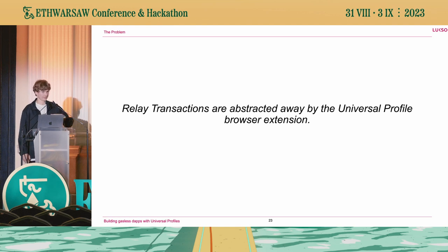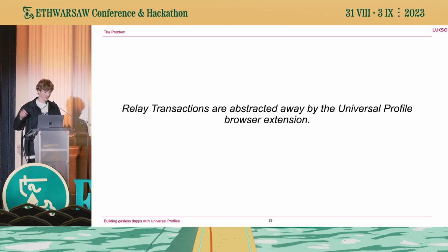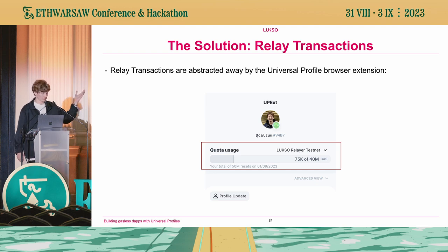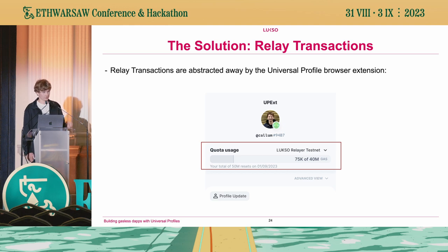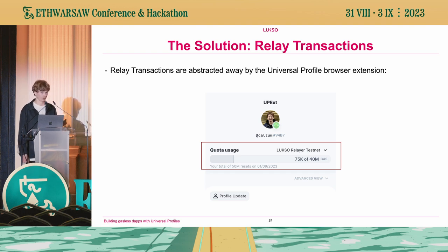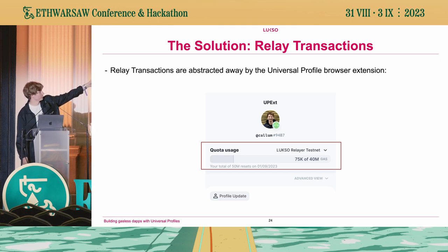All of this is abstracted away from the user entirely — the user doesn't know any of this is really happening. The browser extension handles all of the signing and relaying to the relay service natively and out of the box. In the transaction confirmation window in our browser extension, you see this terminology of a quota. We think transaction relay services will behave similarly to a mobile phone contract or internet service provider, where you pay per month and get some amount of data. Here I've used 75,000 out of 40 million gas, and it resets at the start of the month.